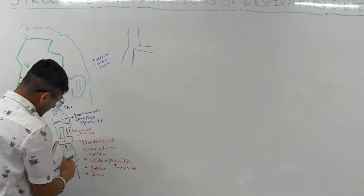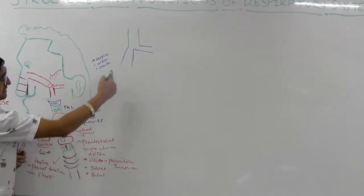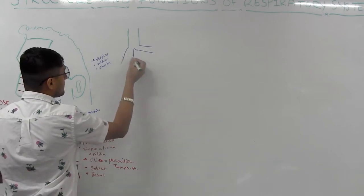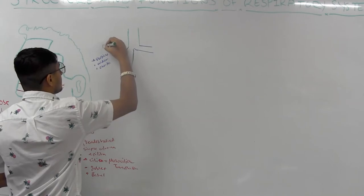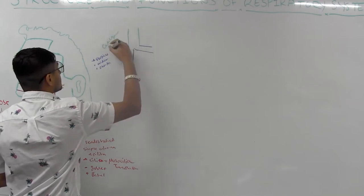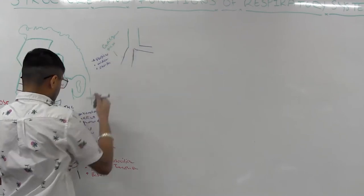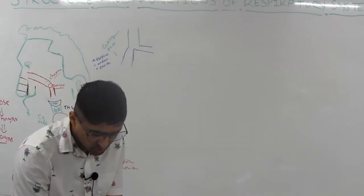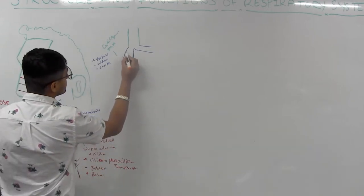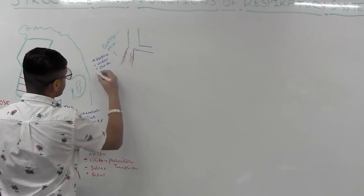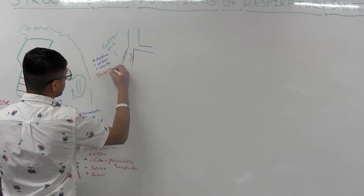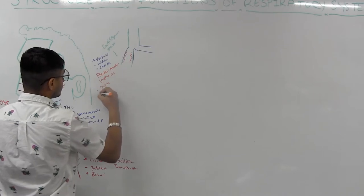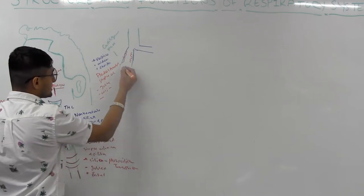These bronchi also have cartilage, but the name changes — it becomes a cartilaginous plate. The lining cells here are pseudostratified ciliated simple columnar epithelium. They do have goblet cells, cilia, and basal cells.